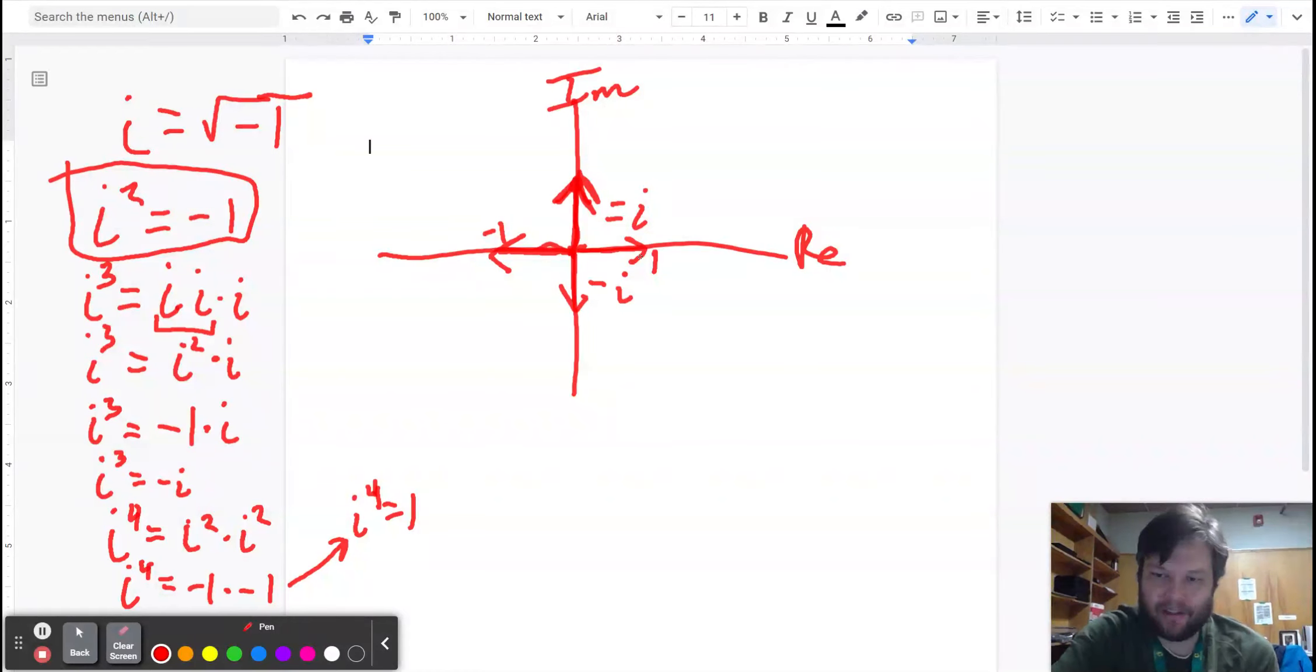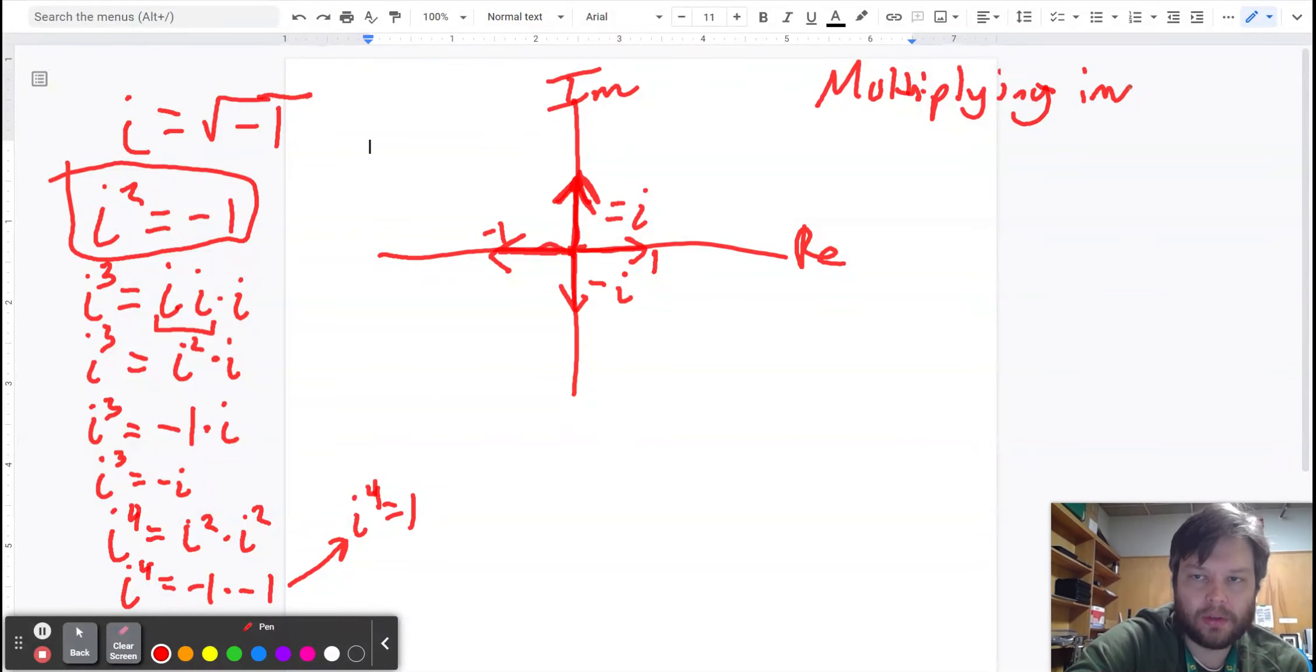So that's the basic idea is that when you multiply two complex numbers, you get another complex number and there's some rotation going. So multiplying involves rotation. It's a little bit weird, but it's kind of cool.